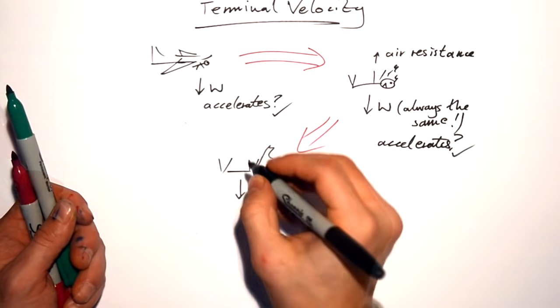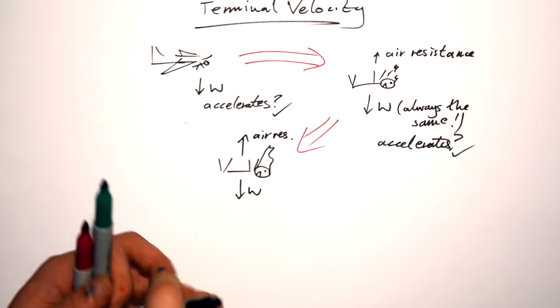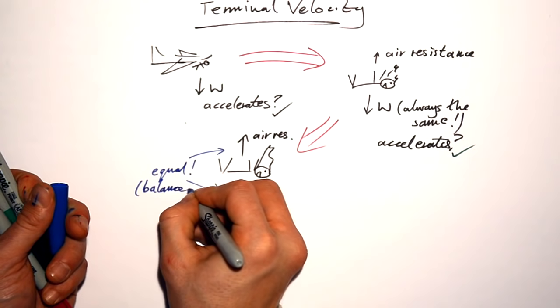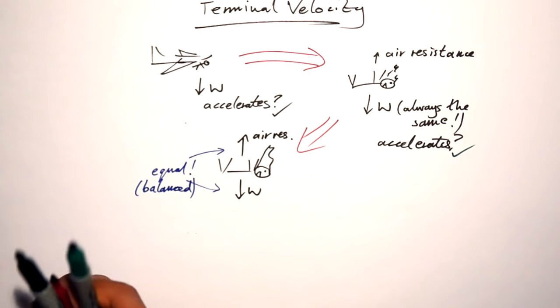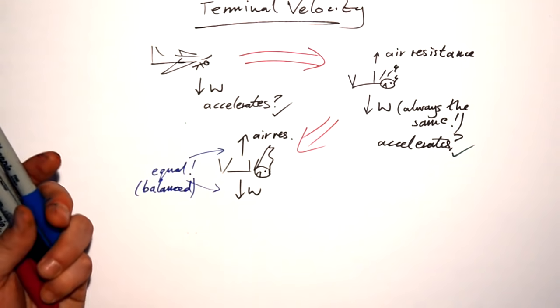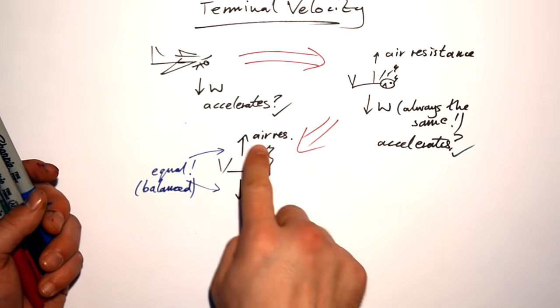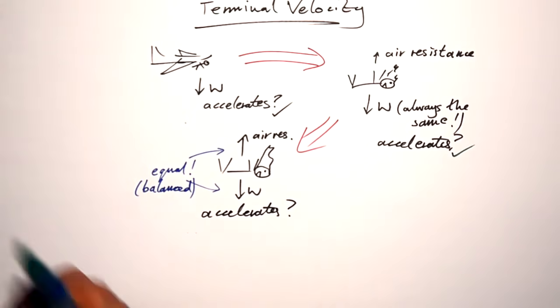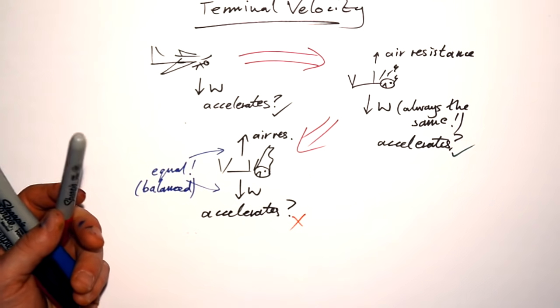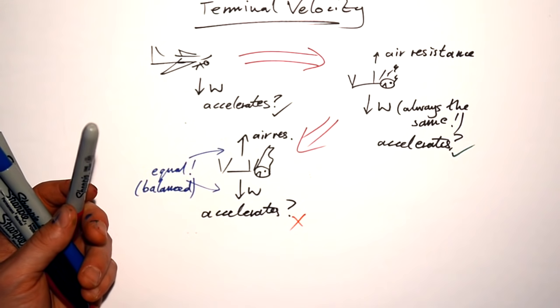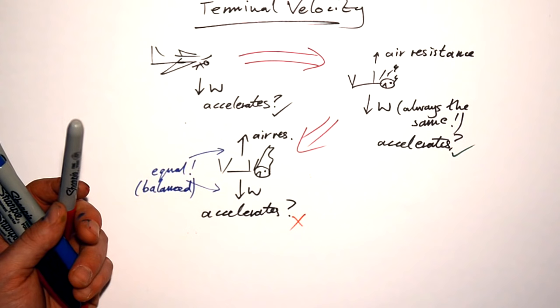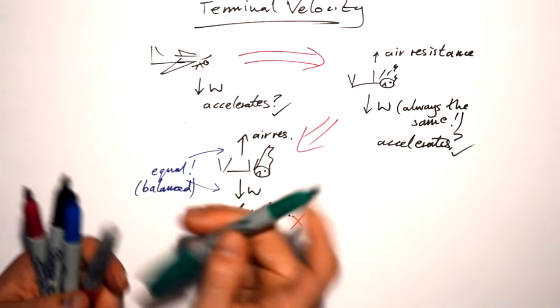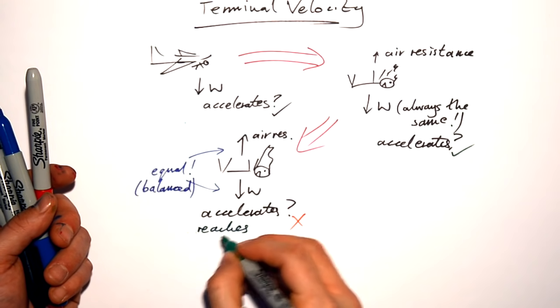Eventually though, the air resistance actually gets faster and faster. They will actually equal. So we say they're balanced. That's when we wander from Newton's second law territory into Newton's first law territory. Now we have no resultant force. There's no net force. The air resistance is as big as the weight in the opposite direction. So therefore, accelerates. Big fat no. That does not mean that she stops. That just means that the speed that she was going, the velocity she was going at the point where this happens, that's the velocity that she keeps on going with. So she reaches terminal velocity.